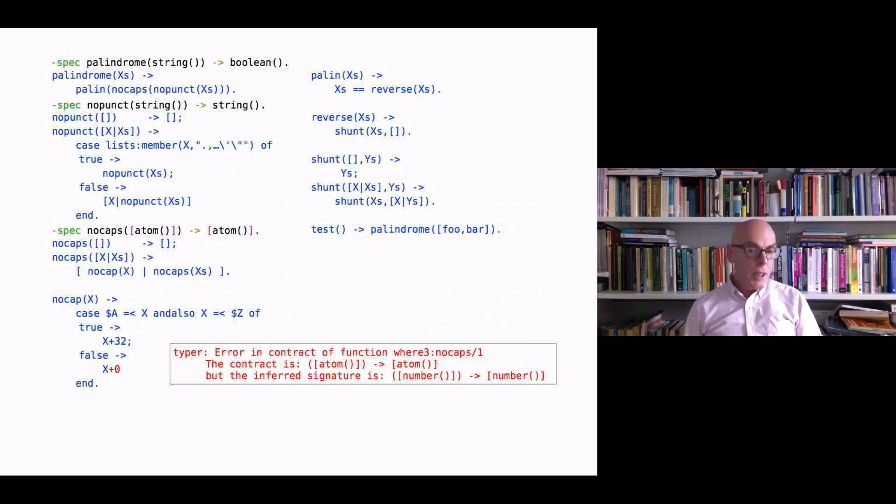So these are what are called success types. They are more permissive than types in other languages. You only get a type error when it's impossible to run the program without an error being produced.